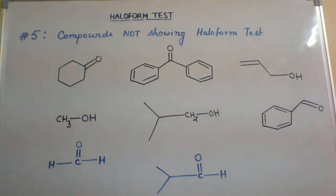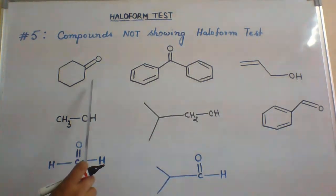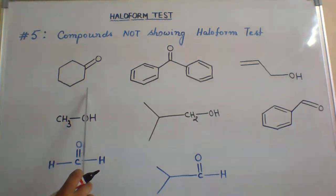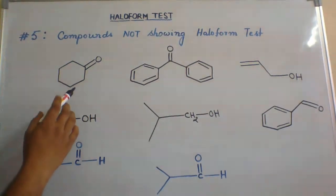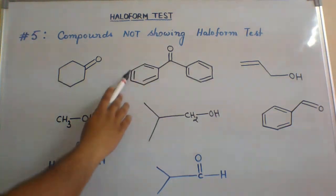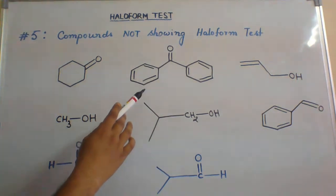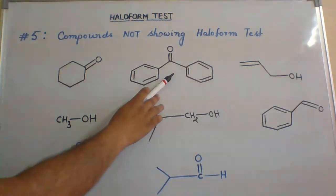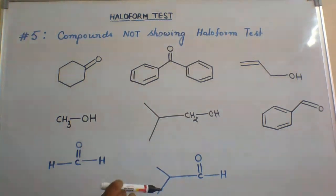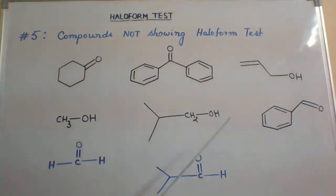Welcome. We are discussing compounds which will not show a positive haloform test. Cyclopentanone will not respond to the haloform test because it does not have a methyl keto group present. Similarly, benzophenone will also give a negative haloform test because it does not have a methyl keto group. Allyl alcohol also fails to give the haloform test.